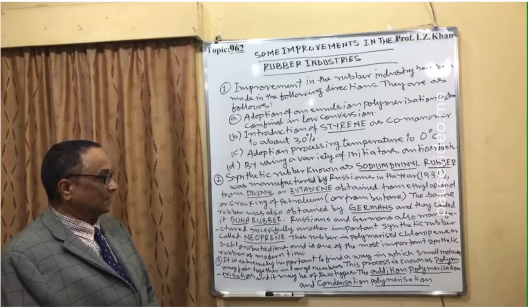It is extremely important to find a way in which small molecules may join together into large molecules. This process is known as polymerization and it may be of two types: addition polymerization and condensation polymerization. We need to find a way for monomers or simple molecules to join together in the form of long chain polymers — by addition polymerization or condensation polymerization — both methods used in synthesis of synthetic rubber.